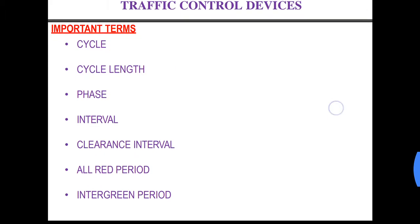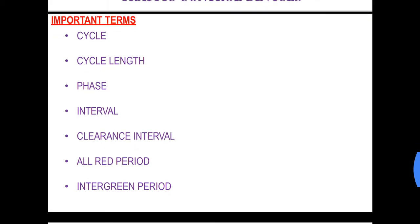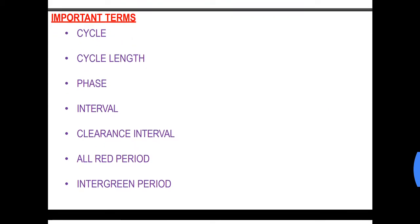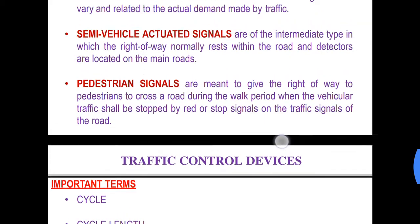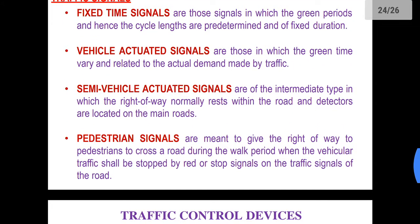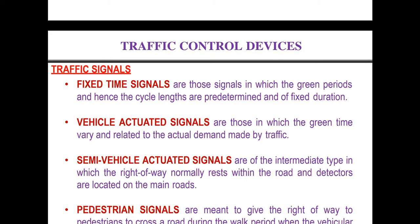Then there are a few terms that we need to understand. Cycle: it is nothing but the completion of one whole cycle of this traffic signal. Supposingly there are four directions or four roads meeting at this point — consider this diagram. A signal is placed at the center.